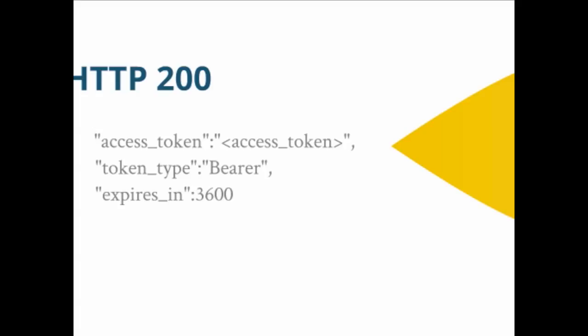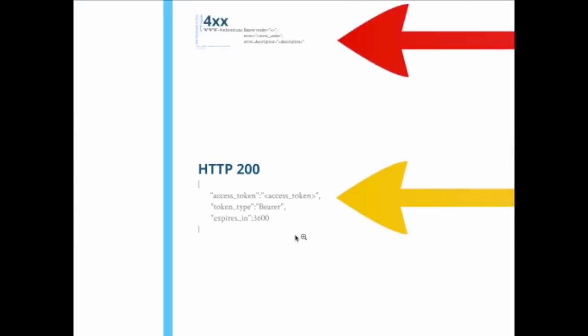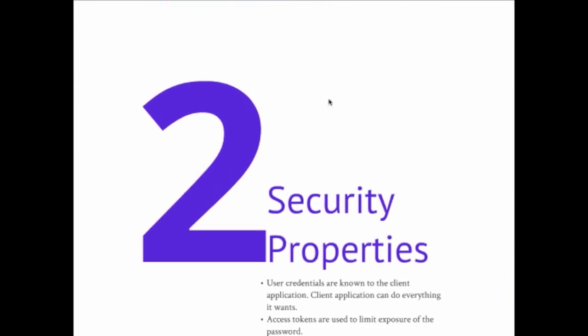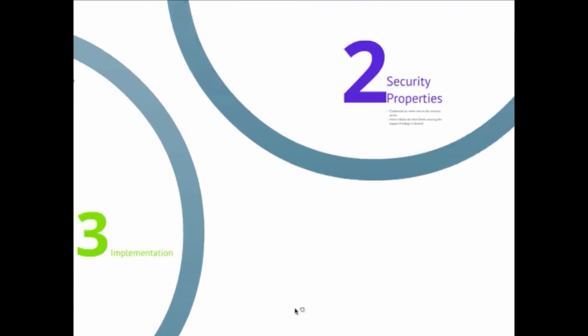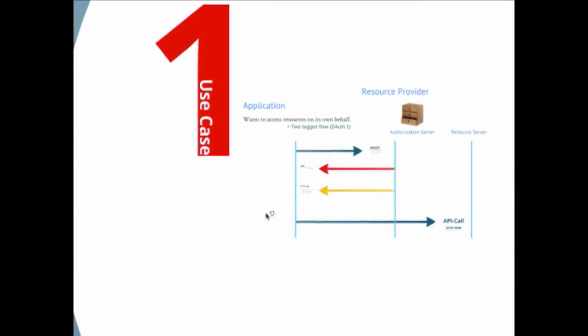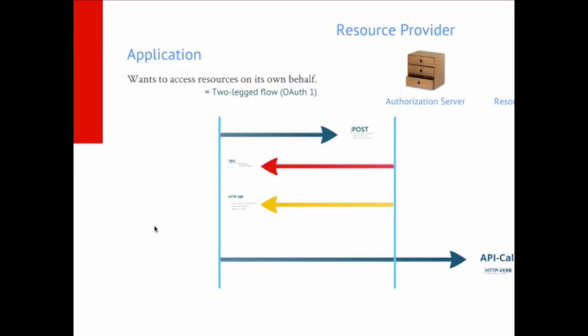This is essentially a 'don't use it' flow intended only for legacy applications — better solutions are available. And then there is the client credentials flow: the use case where an application simply wants to access something at a resource provider on its own behalf, with no user involved.